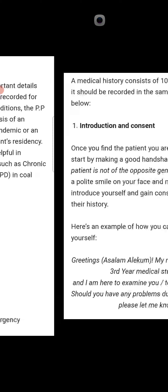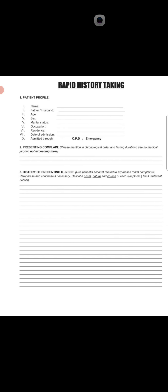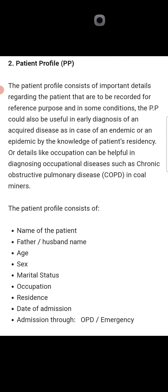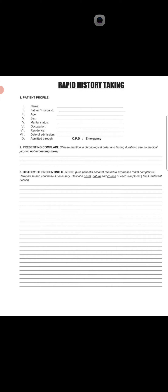The patient profile in the rapid history taking sheet includes: name, father's or husband's name, age, sex, marital status, occupation, residency, date of admission, and admission through OPD or emergency.